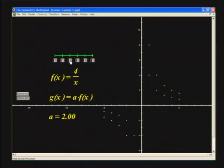I'm getting the hang of this. I suppose that when we move the marker to a position less than 1 but greater than 0, then the points of the transformed function will be moving closer to the x-axis than the points of the original function. Let's confirm that.